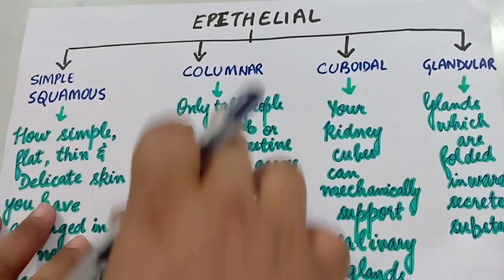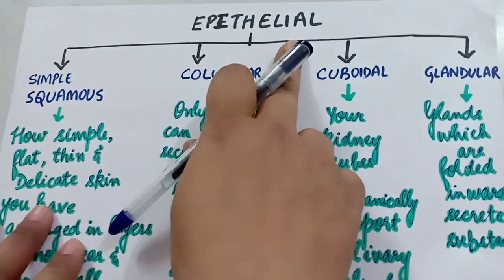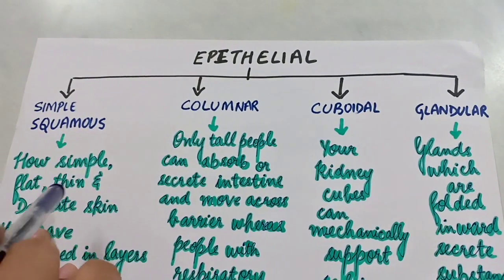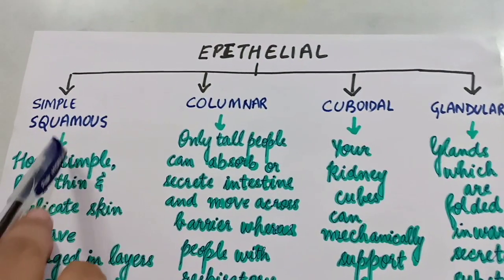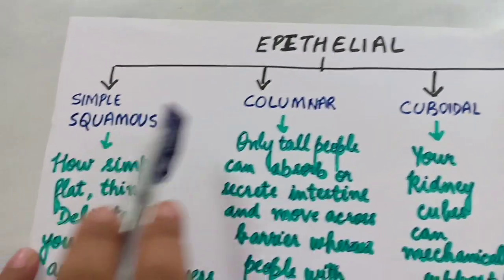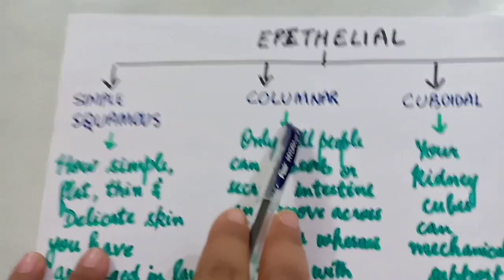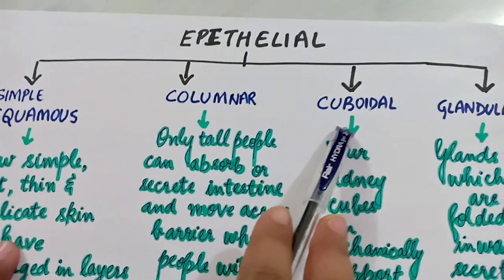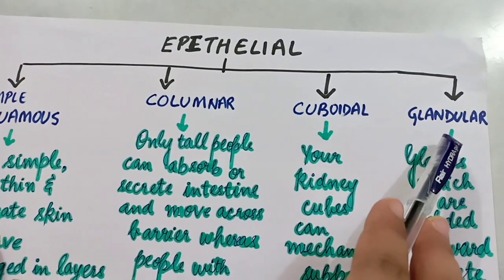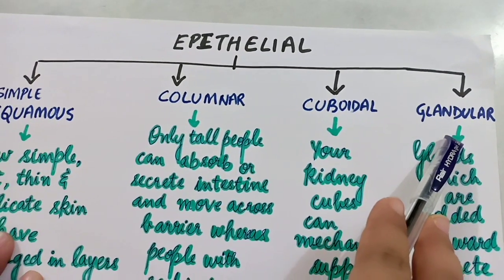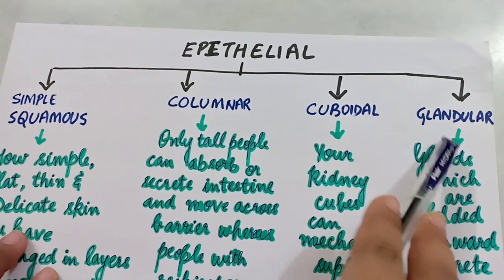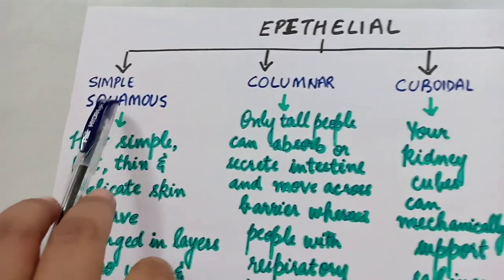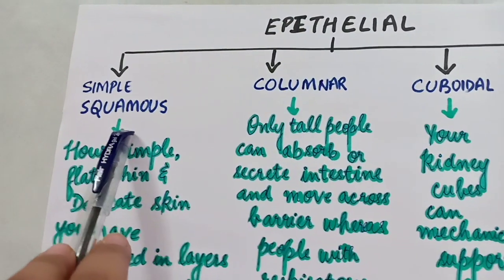Epithelial tissue is basically of four types: simple squamous, columnar, cuboidal, and glandular. The first one is simple squamous.